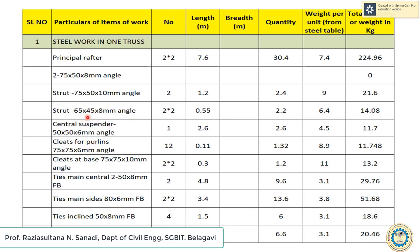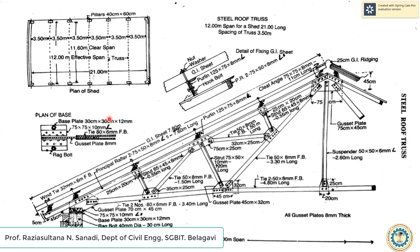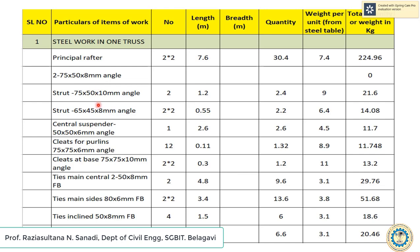Next is strut 65 x 45 x 8 mm angle, 0.55 meters long. There are 2 struts of this type at each side, so both sides gives 4 total. With 2 x 2 at 0.55 meters, you get the quantity. Multiplying quantity by weight per unit from the steel table gives a total of 14.08 kg.